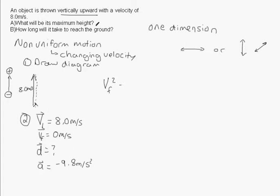The formula is VF squared equals VI squared plus 2AD. Looking at this formula, I have VF, I know VI, and I know A, but I do not know D. That's a good formula to choose because I know three of the variables but not one. Always pick a formula where you only have one unknown — here the unknown is D.